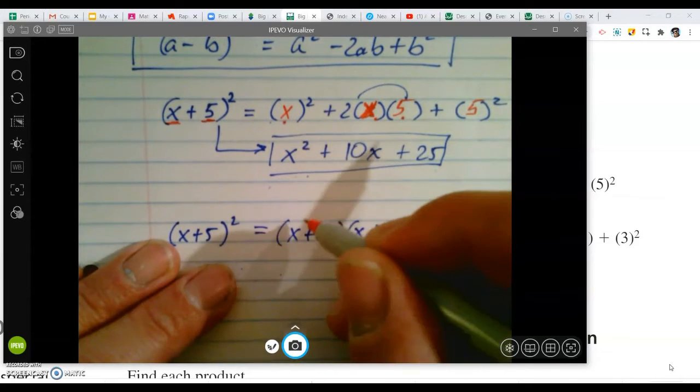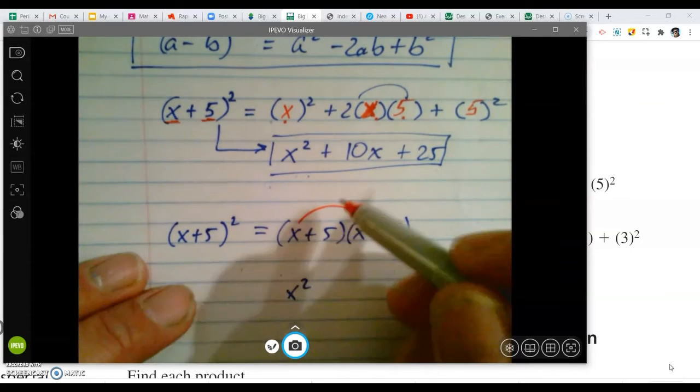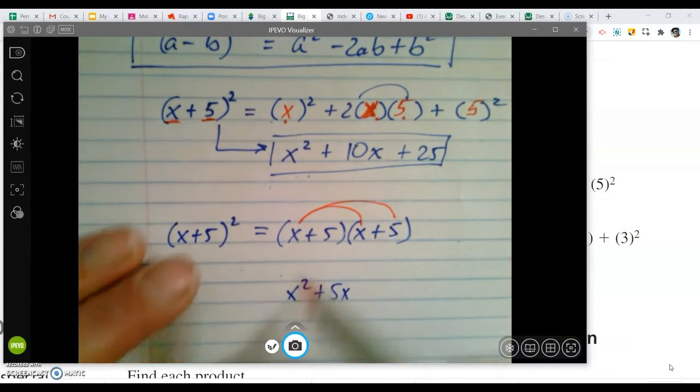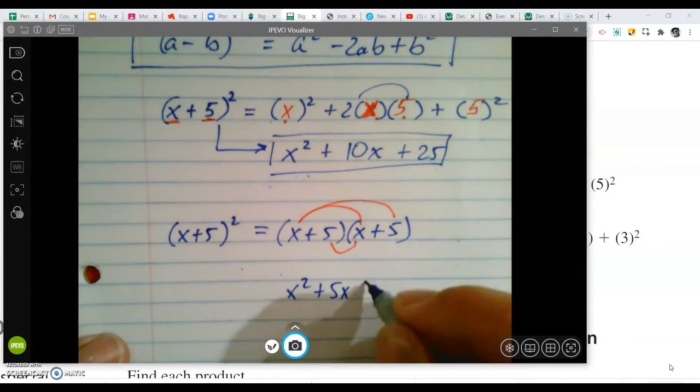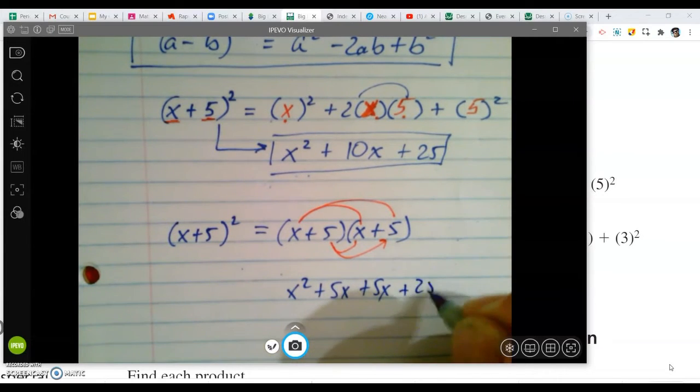So it's the same problem. I'm just going to show you through FOIL. So first, you get x squared. Outside, you get 5x. Inside, you get 5x. Last, you get 5 times 5, which is 25.